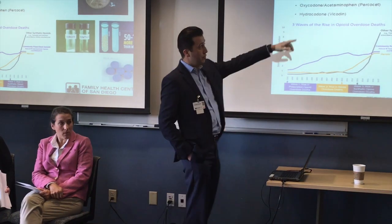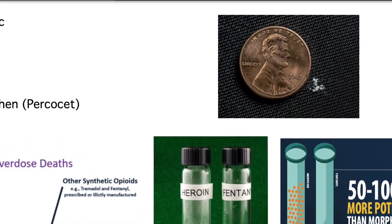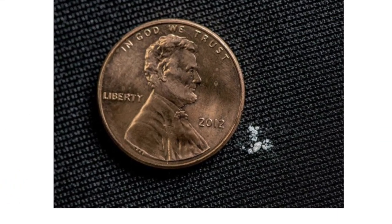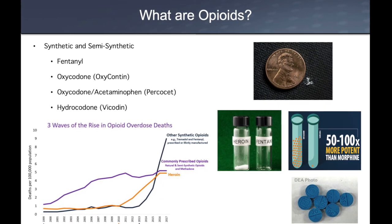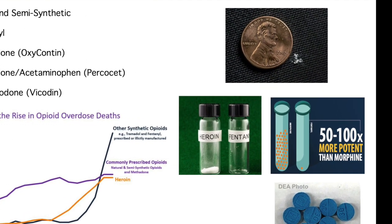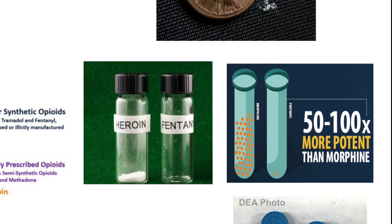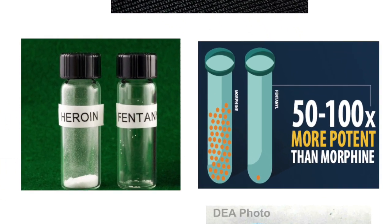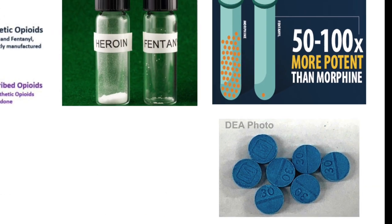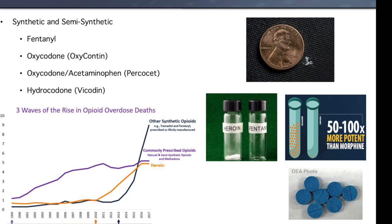What is fentanyl? If you look at the upper right, you'll see a penny with some flakes of fentanyl — they're like grains of salt. That amount is enough to kill an adult individual. For comparison, the bottom shows a lethal dose of heroin next to a lethal dose of fentanyl, and you can see the difference in quantity. Fentanyl is about 50 to 100 times more potent than heroin. You'll also see what are called 'blues' or M30 tablets on the street — illicit tablets produced and sold containing fentanyl — and that's also driving a lot of overdose deaths.